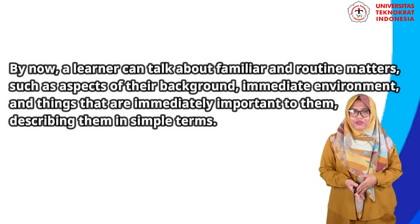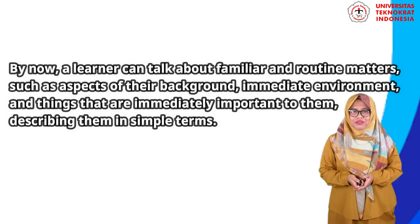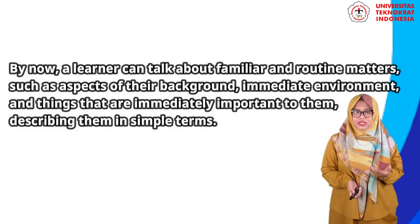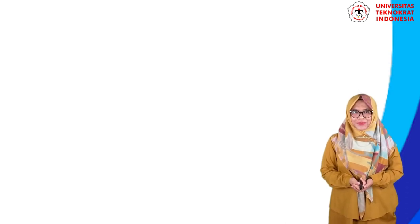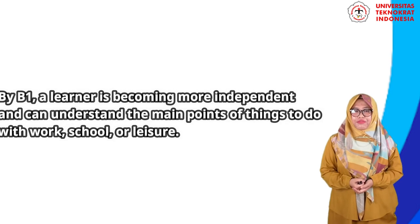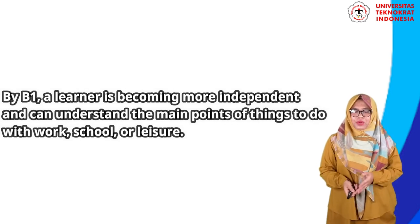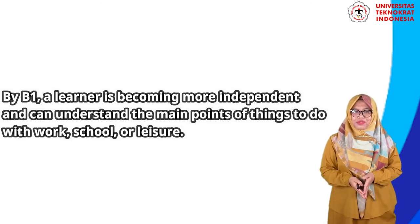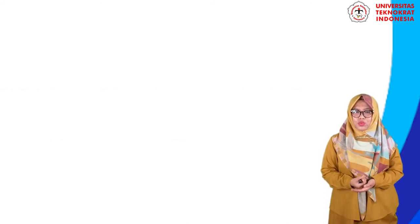The next level is A2. By now, a learner can talk about familiar and routine matters, such as aspects of their background, immediate environment, and things that are immediately important to them, by describing them in simple terms. At B1 level, a learner is becoming more independent and can understand the main points of things to do with work, school, or leisure, if they are stated very clearly. They can deal with most general situations and describe experiences, events, dreams, hopes, and ambitions.